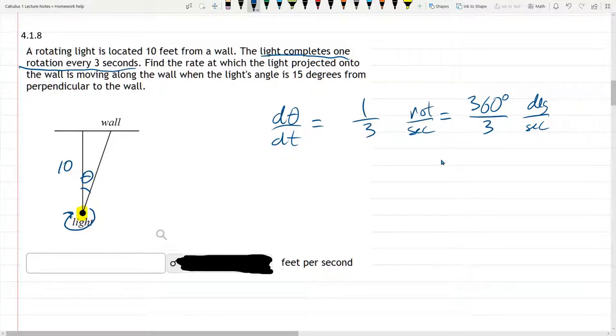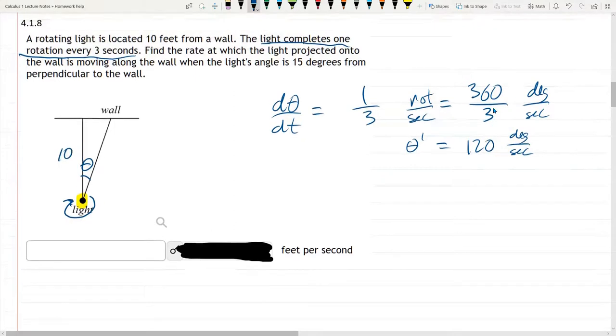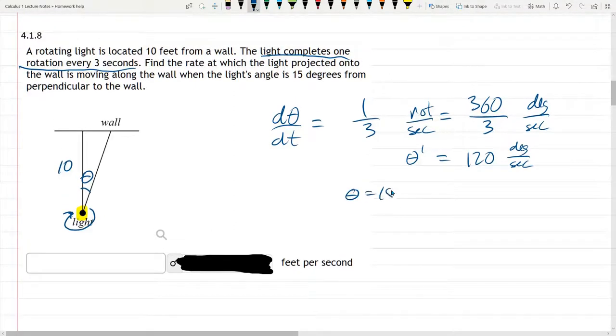Alright, so that's dθ/dt, and of course you can reduce this to 120. I've already messed up my units, that's why I never write units. If you're going to write degree divided by seconds, you don't need the degree symbol right next to 360. So 120 degrees per second. So that's dθ/dt, also known as theta prime. We need to, and of course theta is 15 degrees.